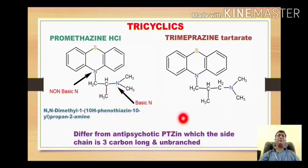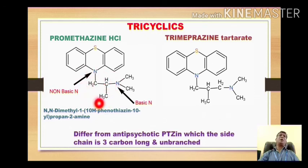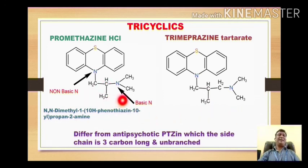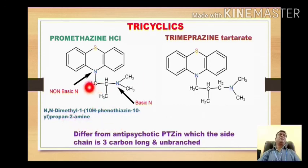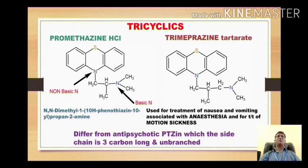In antihistaminic phenothiazines, the carbon chain between the two nitrogens is a branched chain, not a continuous one. So when branching is present between the two nitrogens, the phenothiazines have the antihistaminic effect. While if it is unbranched, such phenothiazine derivatives have the antipsychotic effect. Both of these drugs are used in treatment of nausea and vomiting associated with anesthesia and motion sickness.